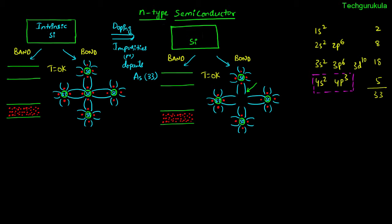Now let me substitute this silicon atom with arsenic. Since arsenic has 5 valence electrons, 4 electrons will participate in bond formations with the neighbors, and we have a fifth electron which will not be in any bond formation. This fifth electron will be loosely bound to the arsenic atom. So we represent all 5 valence electrons of arsenic — only 4 participating in bonds and one loosely bound.